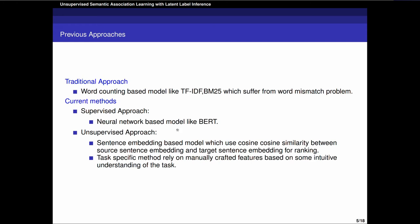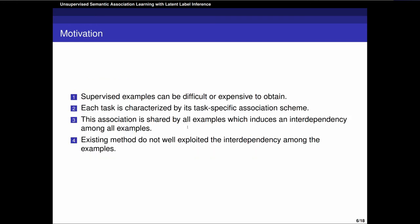One is based on unsupervised sentence embedding models. The other is task-specific methods which rely on manually crafted features about one subtask of semantic association learning. In practice, the supervised signal for training a supervised model can be difficult or expensive to obtain. So it is meaningful to study an unsupervised manner for semantic association learning.